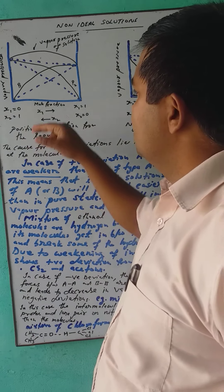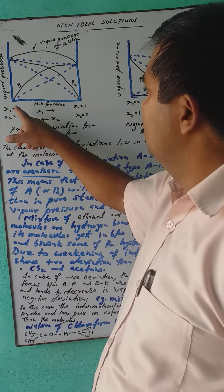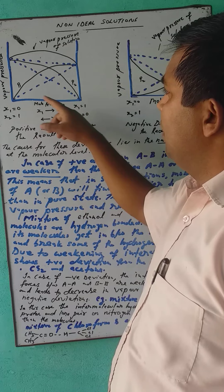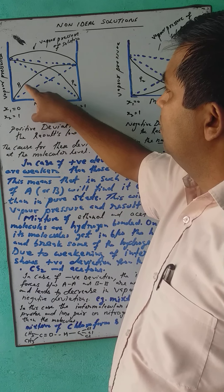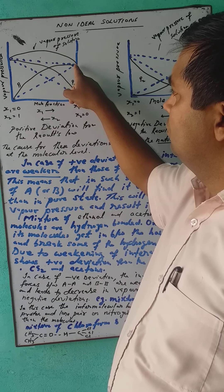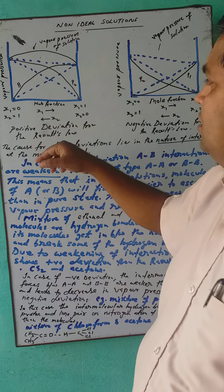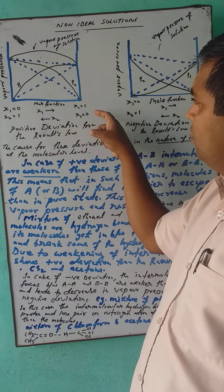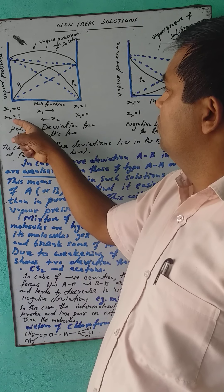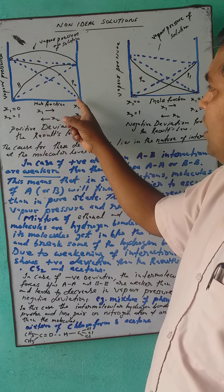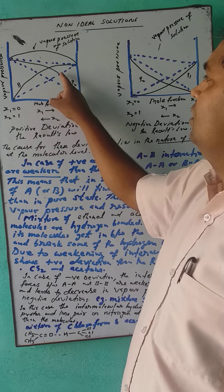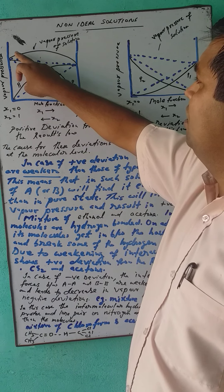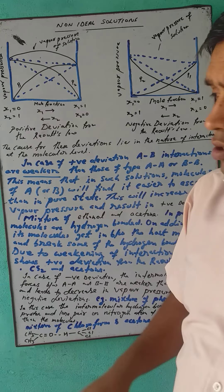When component one's mole fraction increases from zero to one, vapor pressure also increases along an upward curve. Similarly, for component two, as the mole fraction increases from zero to one, the vapor pressure also increases, generated by this curve. The vapor pressure of the solution is indicated by this curve, but ideal solutions have a straight line graph.